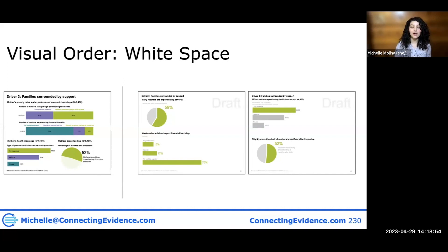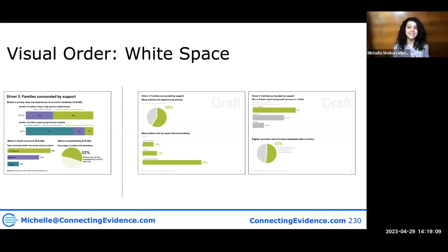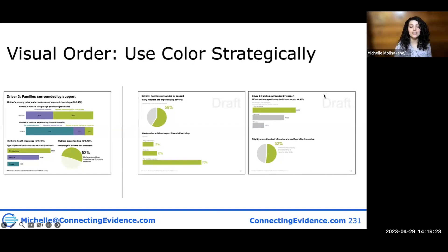Another thing that helps our brains process information is white space. Here's an example from a couple of reports I put together. It's the same information, but I simply separated it so that it was easier to read and take in.